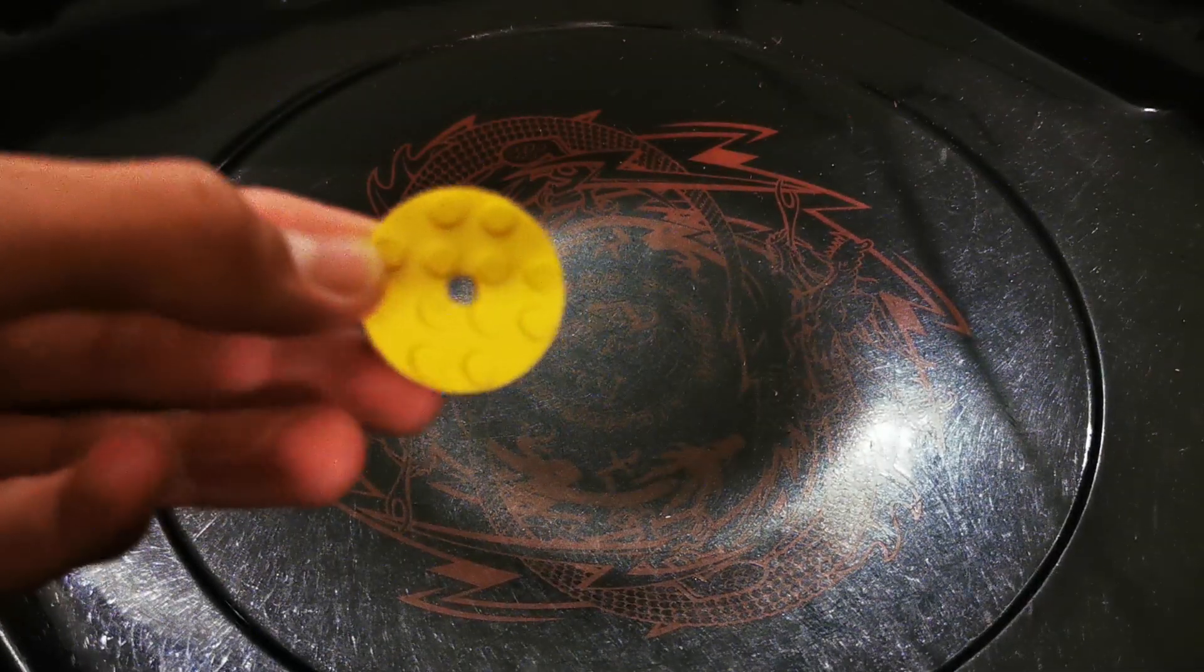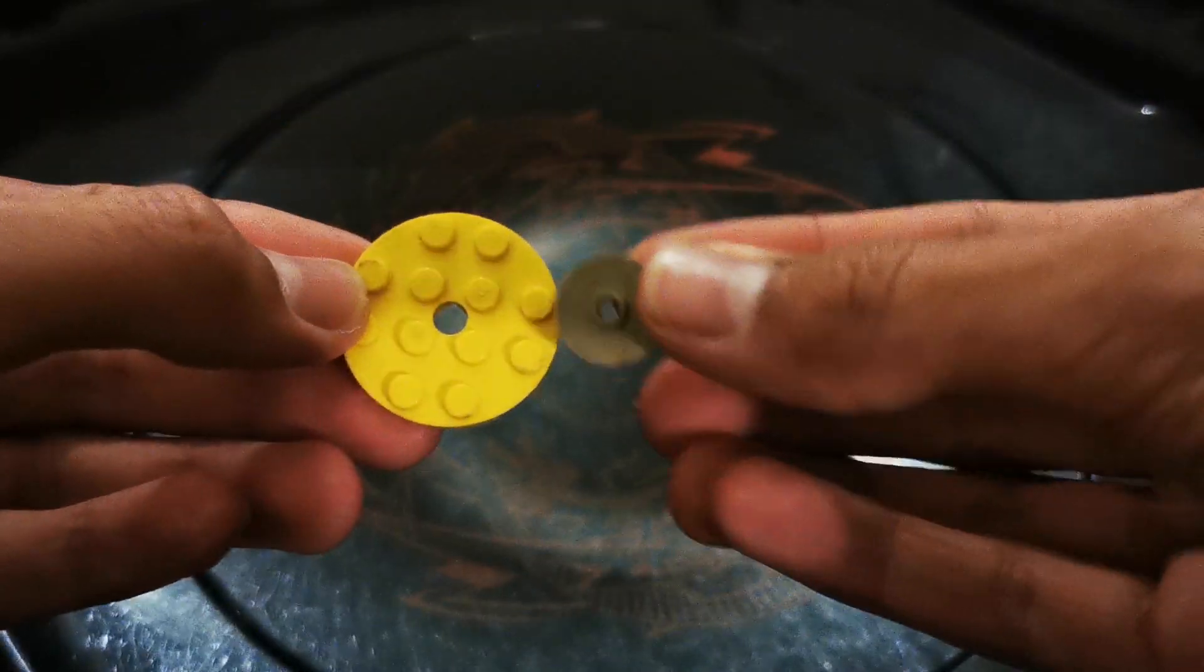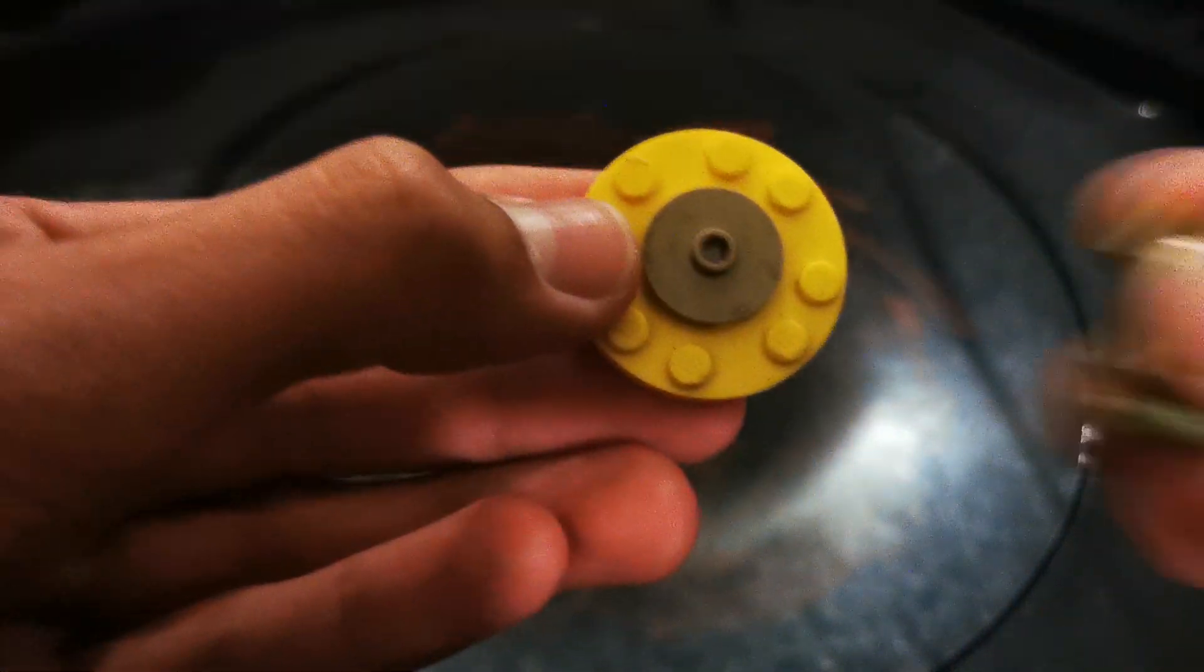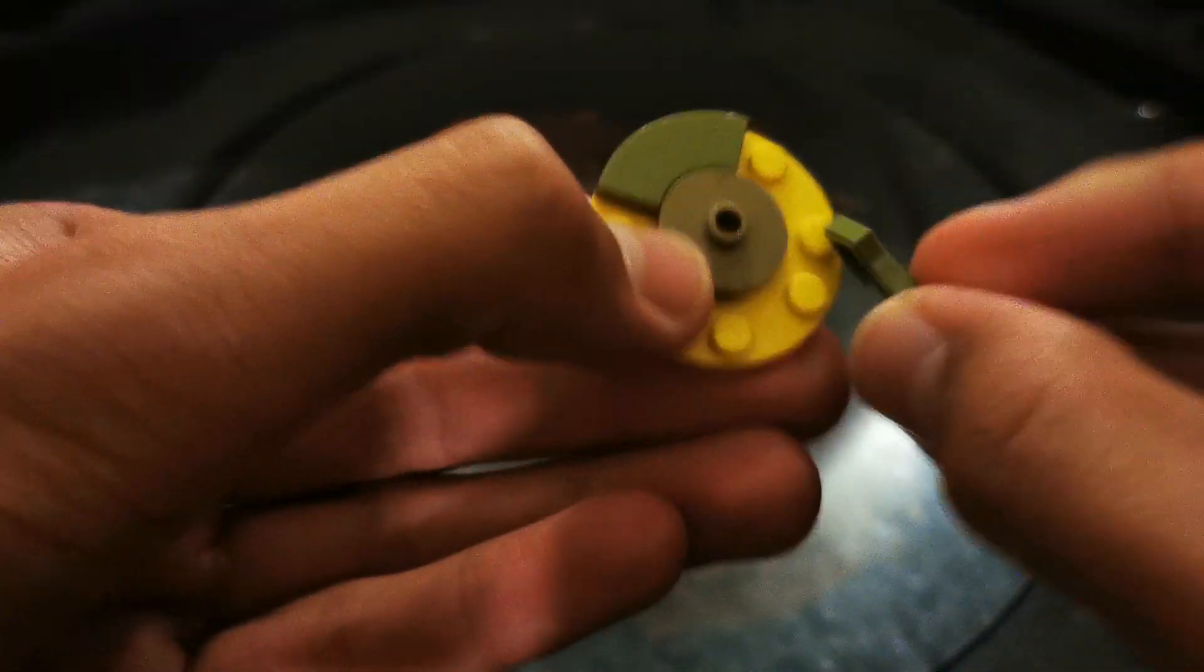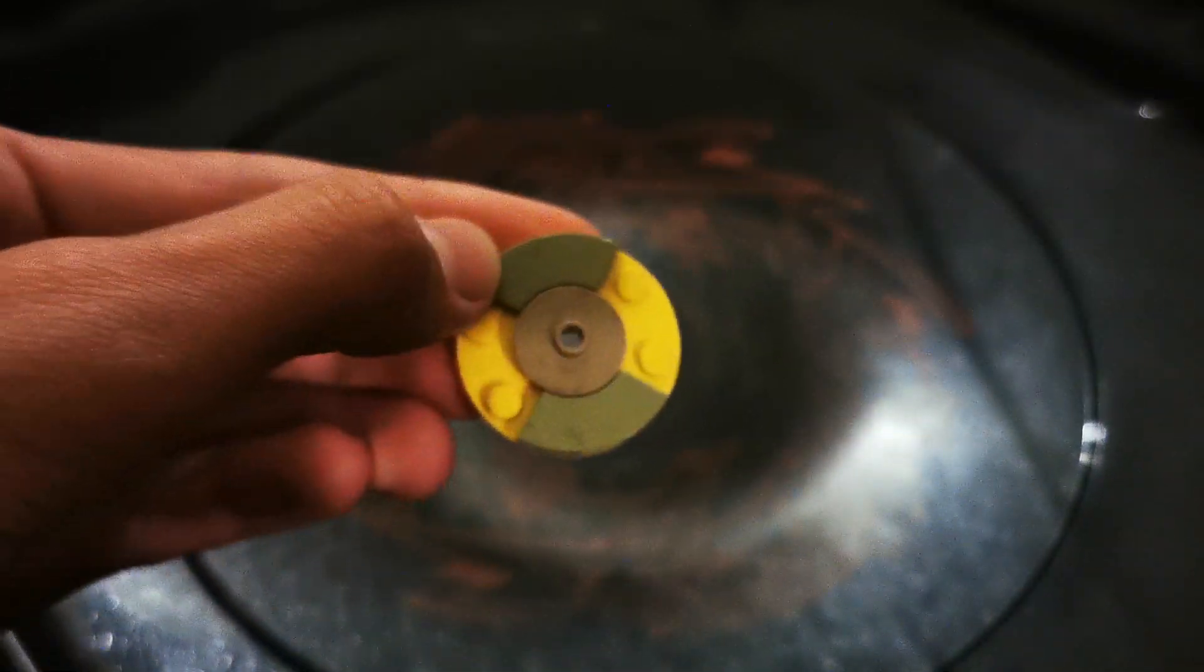First grab a 4x4 circular tile in yellow. Then grab a 2x2 circular tile in any colour with a singular stud in the middle. Now grab these macaroni shaped pieces and put them there to make this.